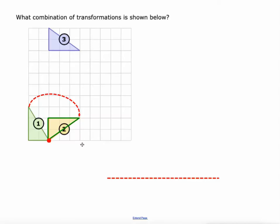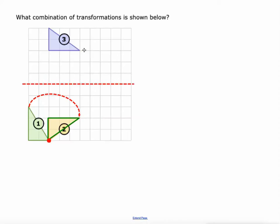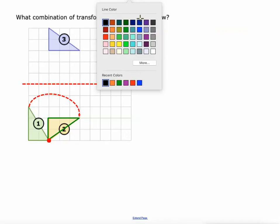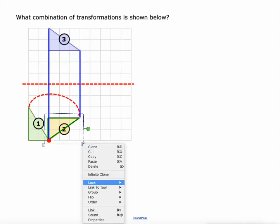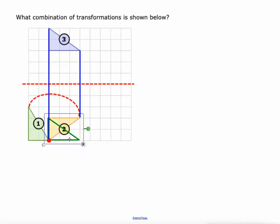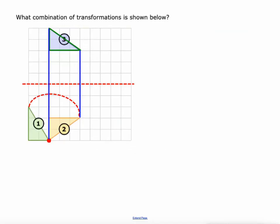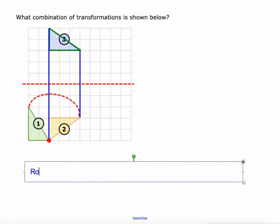Next, how do I turn figure two into figure three? That's going to be a reflection, and there's my line of reflection right there. We'll connect some corresponding vertices with blue lines, and again those blue lines are cut in half by the red line of reflection and they meet the line of reflection at a 90 degree angle. So I'll flip it. Our answer then is a rotation then reflection.